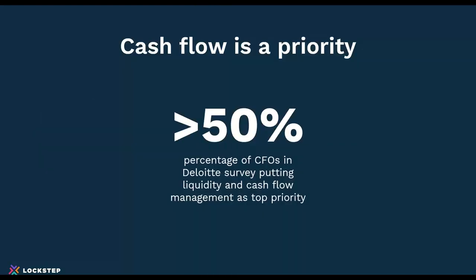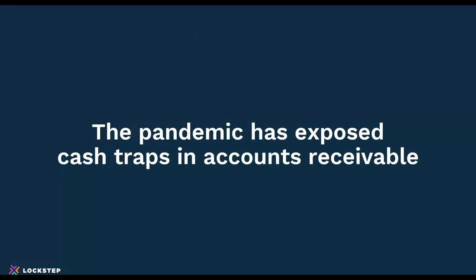Currently, cash flow has really bubbled to the top as a priority. In a recent Deloitte survey, a large majority of CFOs said one of the most important roles has been managing cash and liquidity. That's driven by the pandemic — making sure you have cash in the door is one of the most important ways to stay in business, because the number one reason businesses fail is a cash flow issue. The pandemic has exposed a lot of cash traps in accounts receivable — things that slow that cash inflow — creating problems for organizations trying to figure out how to reduce those gaps and delays.